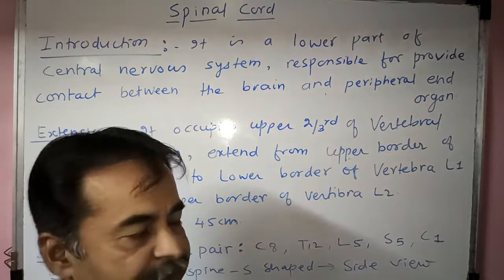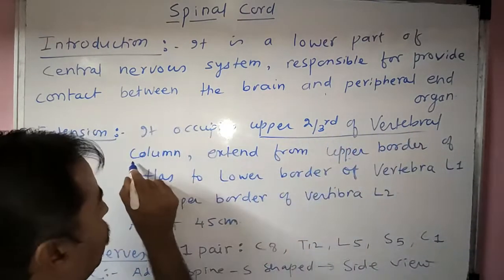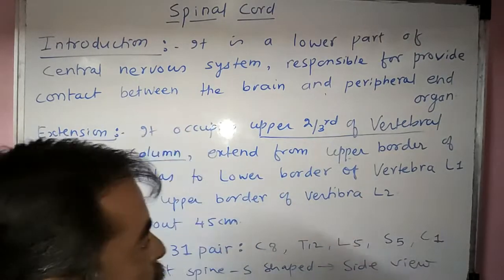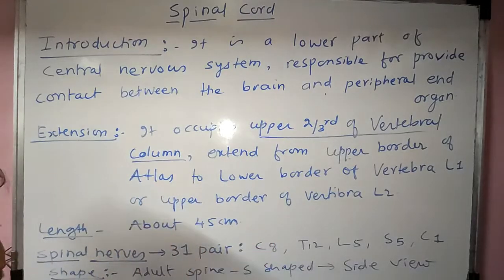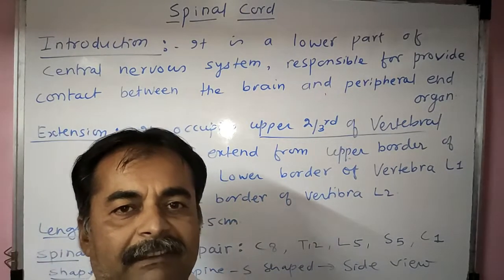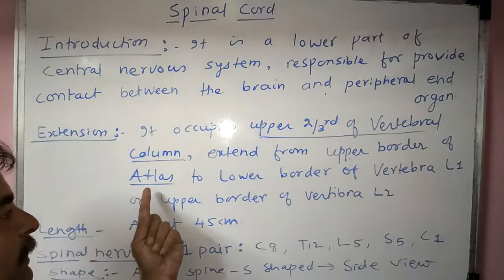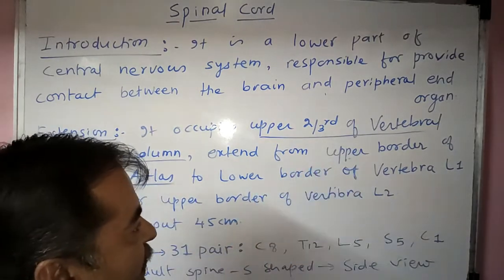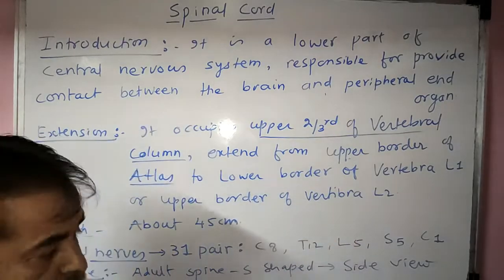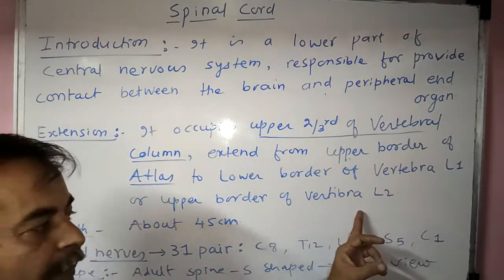Now we will see the extension of the spinal cord. It occupies the upper two-thirds of the vertebral column and extends from the upper border of the atlas vertebra — which is the first cervical vertebra, also at the level of the foramen magnum — to the lower border of vertebra L1 or the upper border of vertebra L2.